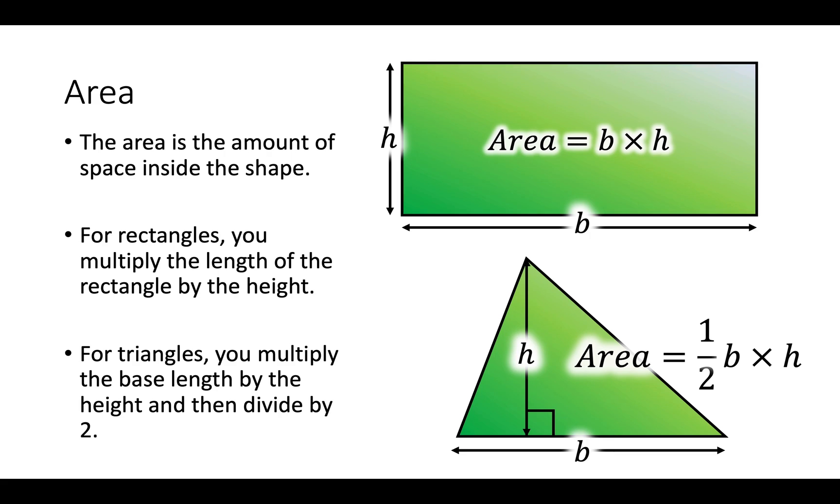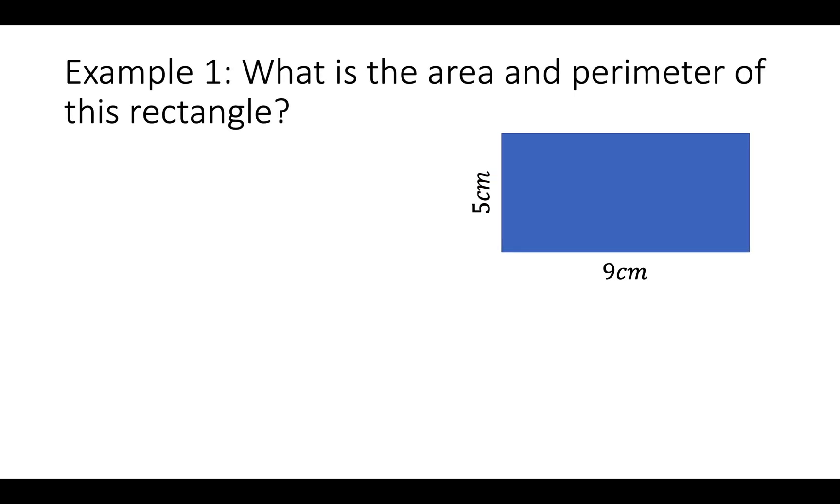Now let's see this in action. What is the area and perimeter of this rectangle? The area is the base times the height which is 9 times 5 which is 45cm squared.